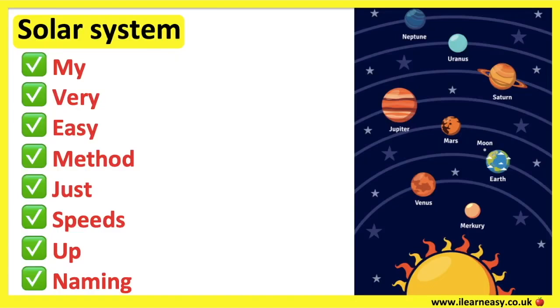An easy way to remember the order of the planets is My Very Easy Method Just Speeds Up Naming. My is for Mercury, V is for Venus, E is for Earth, M is for Mars, J is for Jupiter, S is for Saturn, U is for Uranus, and N is for Neptune.